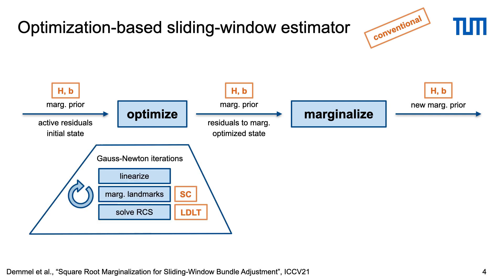In every iteration of the Gauss-Newton-style optimization, we first linearize residuals, then temporarily marginalize landmarks using the Schur complement, and solve the resulting reduced camera system with Cholesky decomposition.